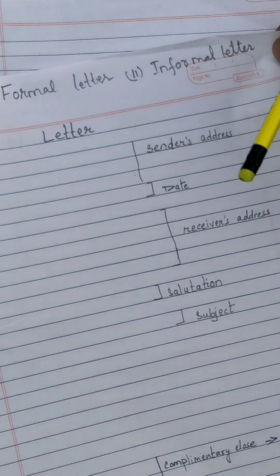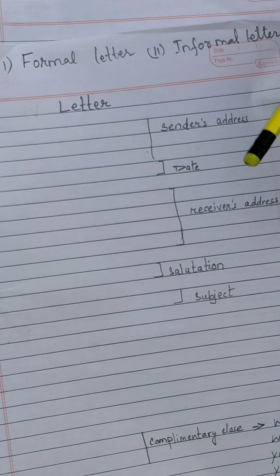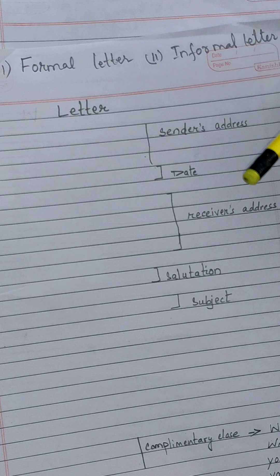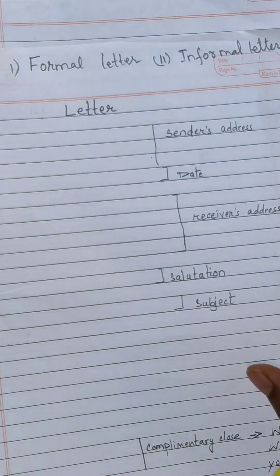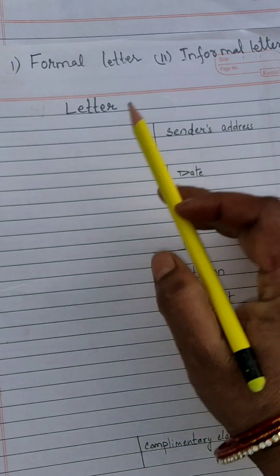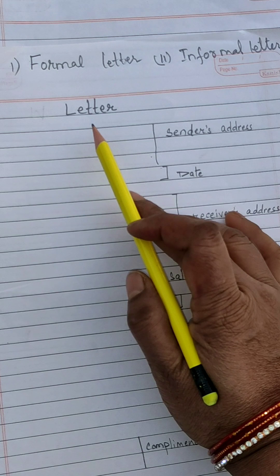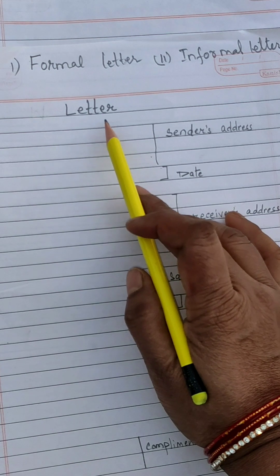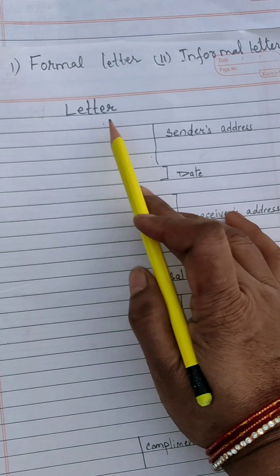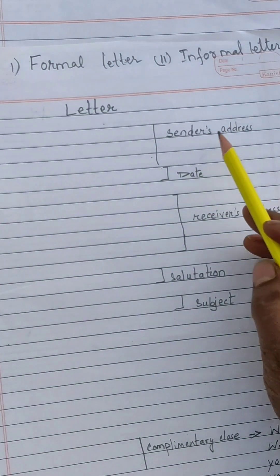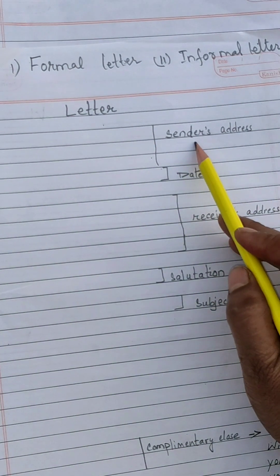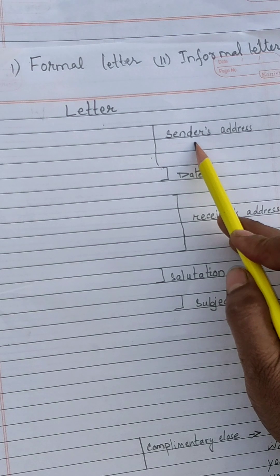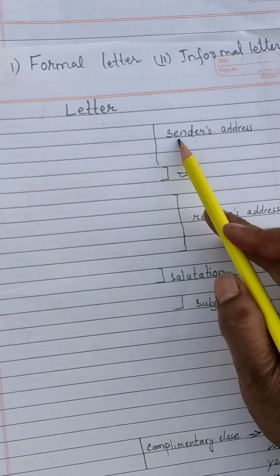So, how do we write it? What is the format? First I am writing the formal letter. In a formal letter, first you have to write the sender's name — it means your name.